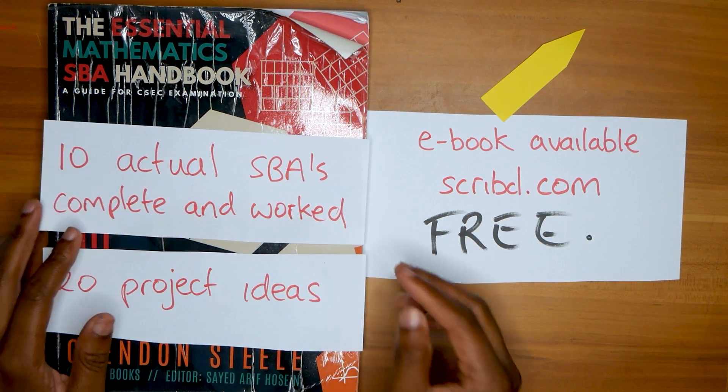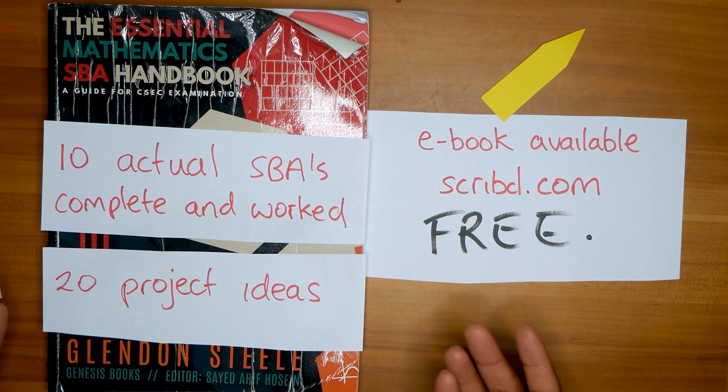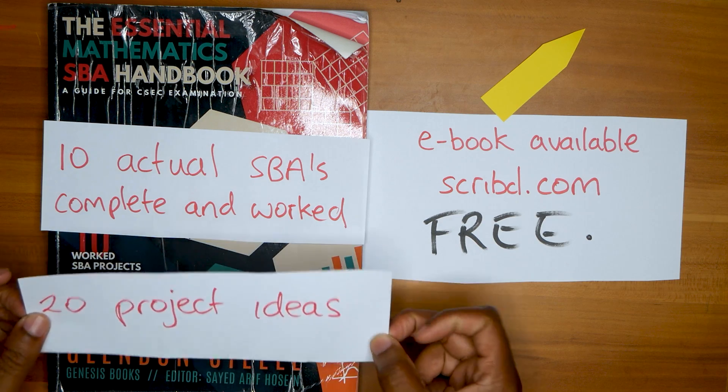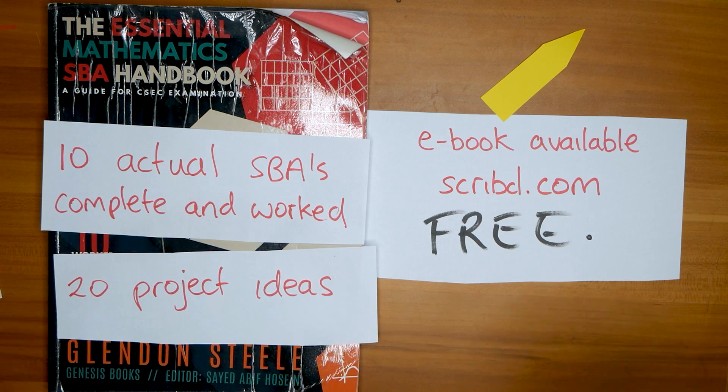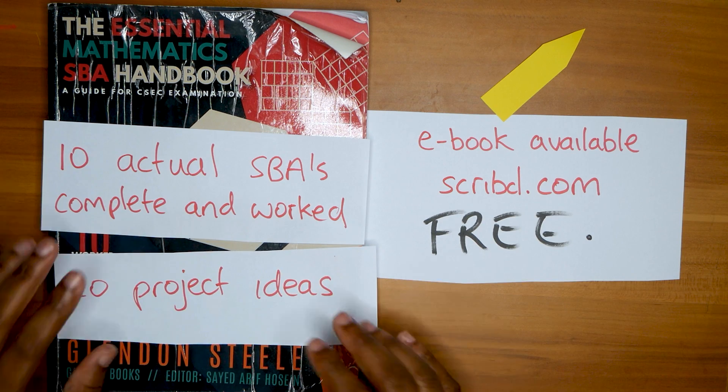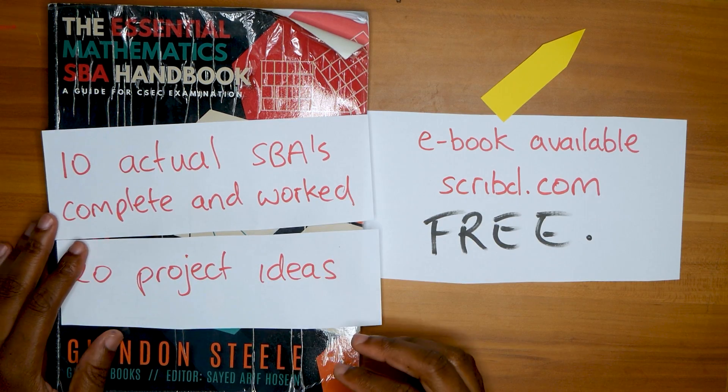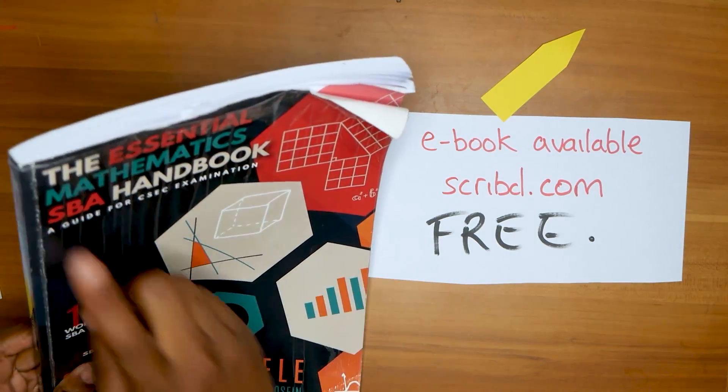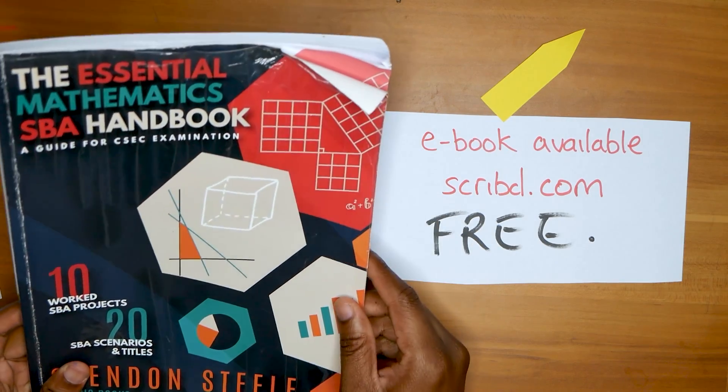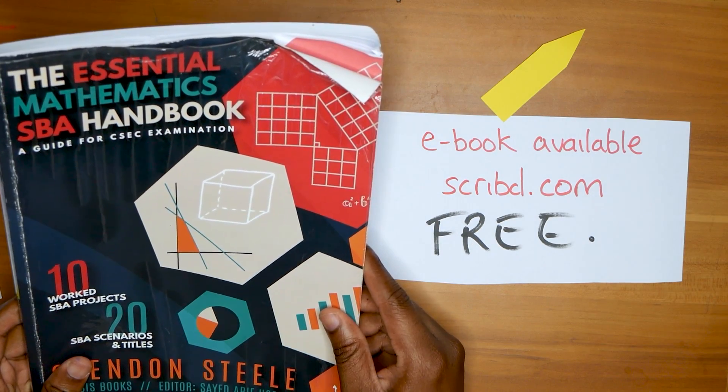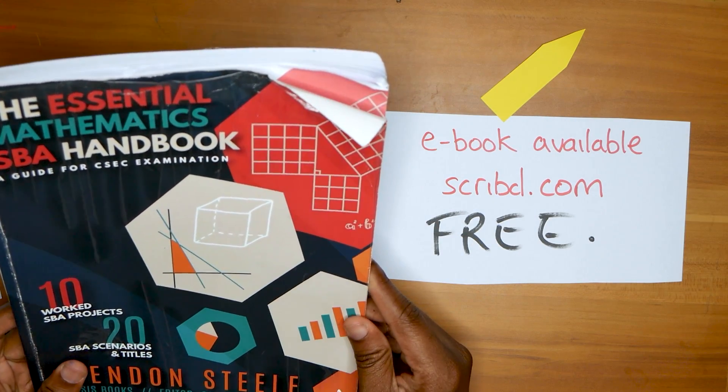Remember, this book has 10 actual SBAs complete and worked in it. It's a really valuable book. I can't go through it obviously because, you know, it's copyrighted material. There's 20 project ideas that you can choose if you want even more project ideas with actual titles that you can start off your SBA from. I think this is the best SBA maths book for CSEC I found.